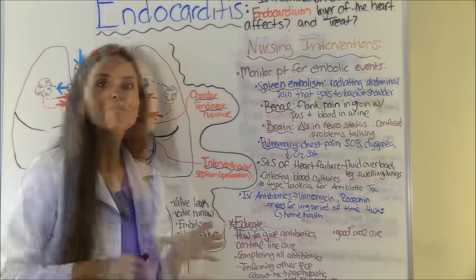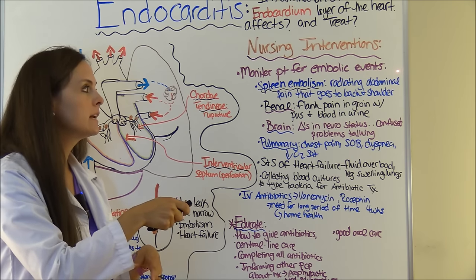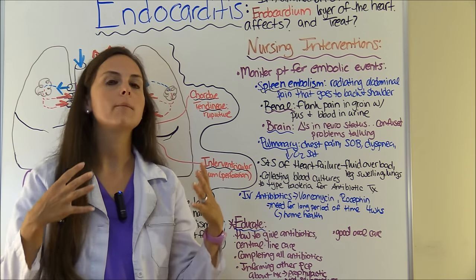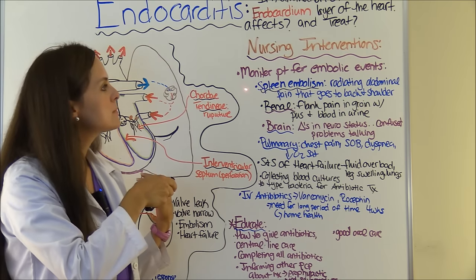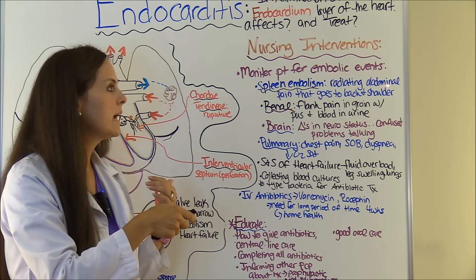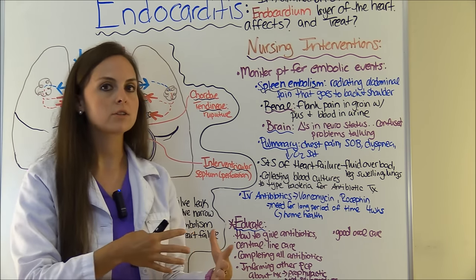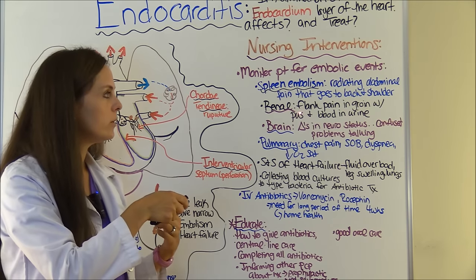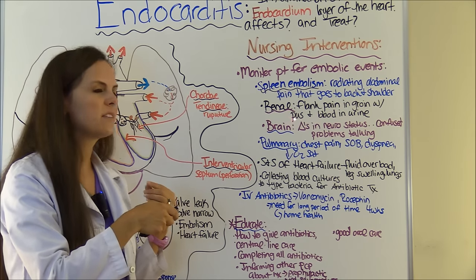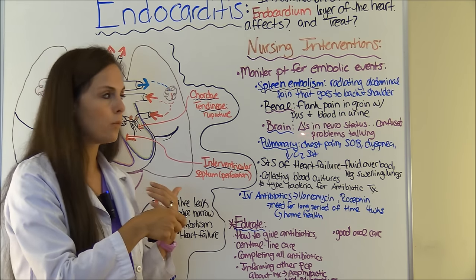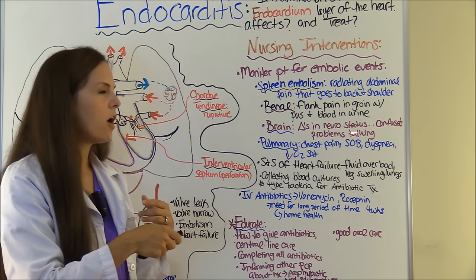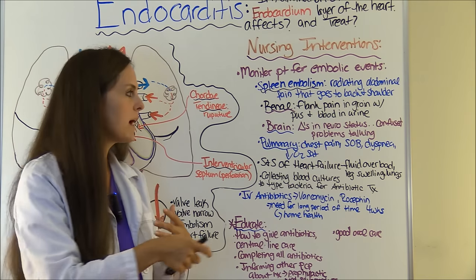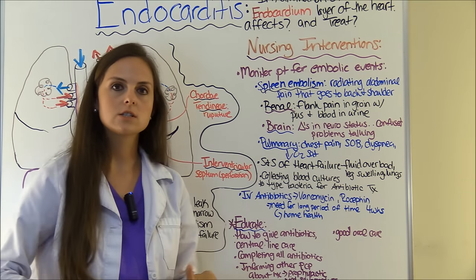For nursing interventions, first monitor the patient for any embolic events, because each different event will have different signs and symptoms. A spleen embolism may present as radiating abdominal pain going from the back to the shoulder. A renal embolism may cause flank pain radiating to the groin with pus and blood in the urine. A central nervous system embolism may cause sudden confusion and difficulty speaking. A pulmonary embolism may present with chest pain, shortness of breath, dyspnea, or plummeting oxygen saturations.